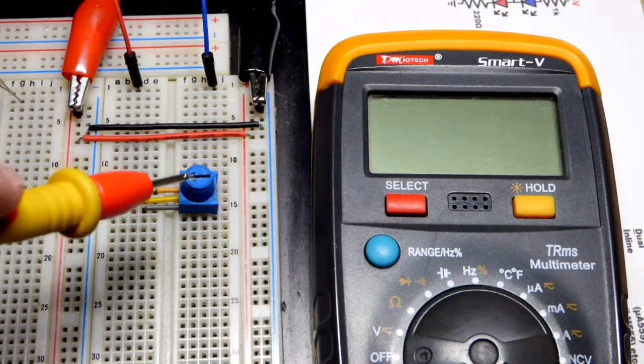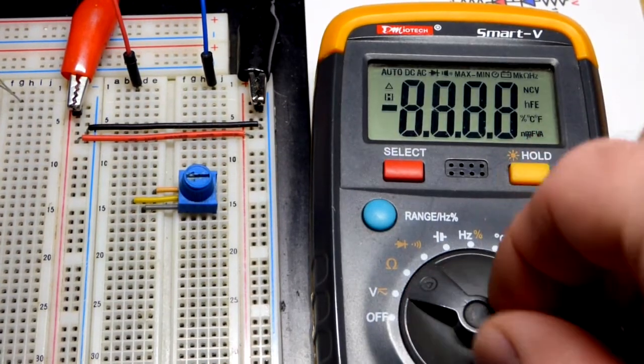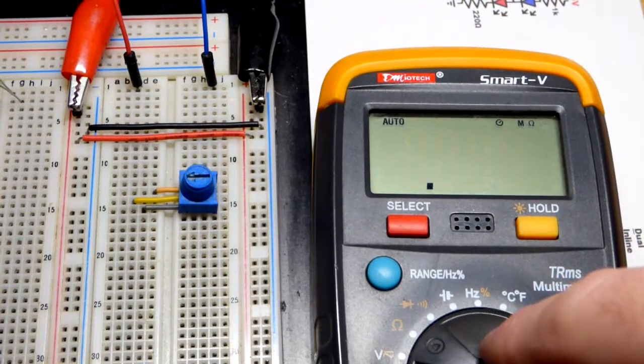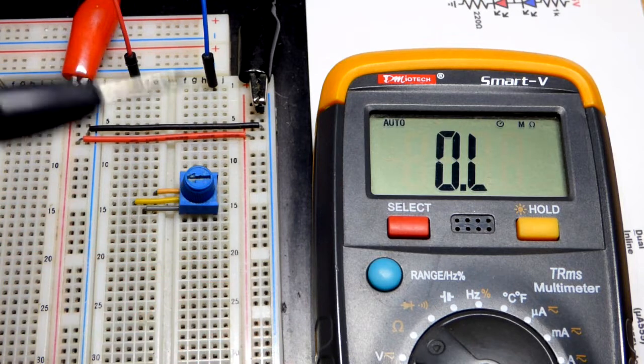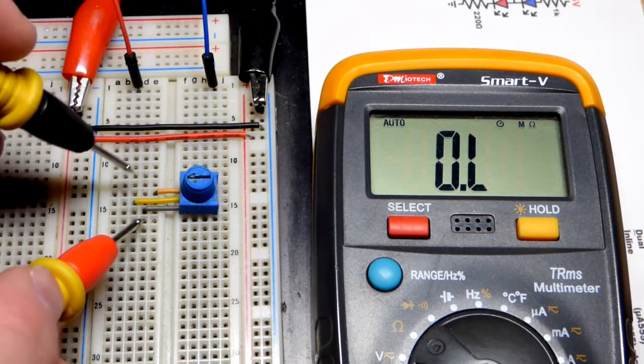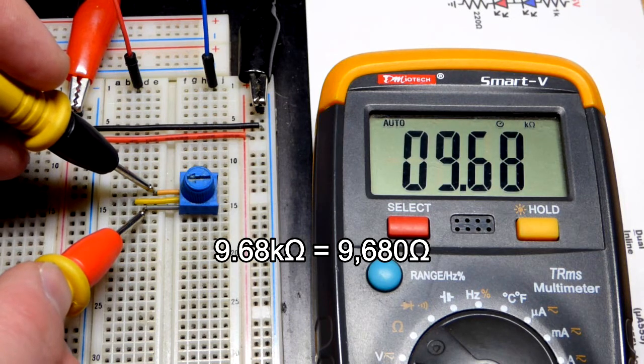Potentiometers are resistive components. They're based on resistance. That's what we're going to measure now. So when you measure resistance, you got to make sure there's no power being applied to the component that you're going to measure. Now polarity doesn't matter. Either one could go to either of these two ends right there.